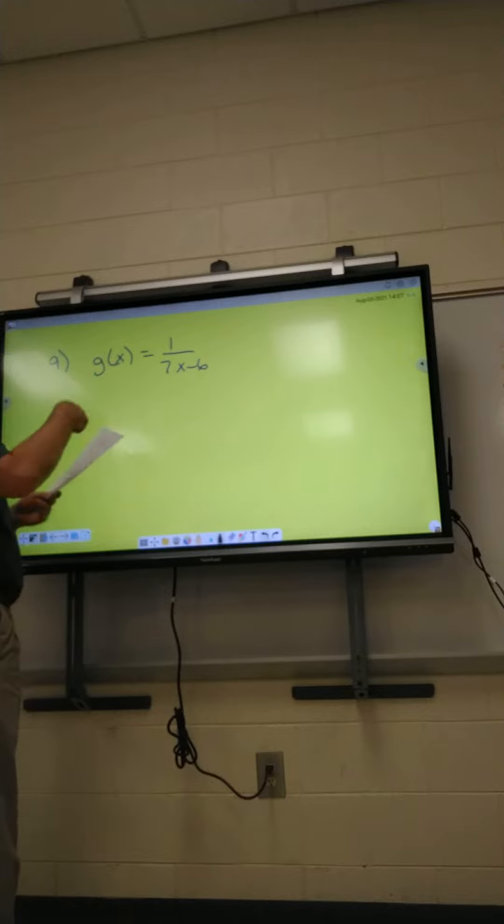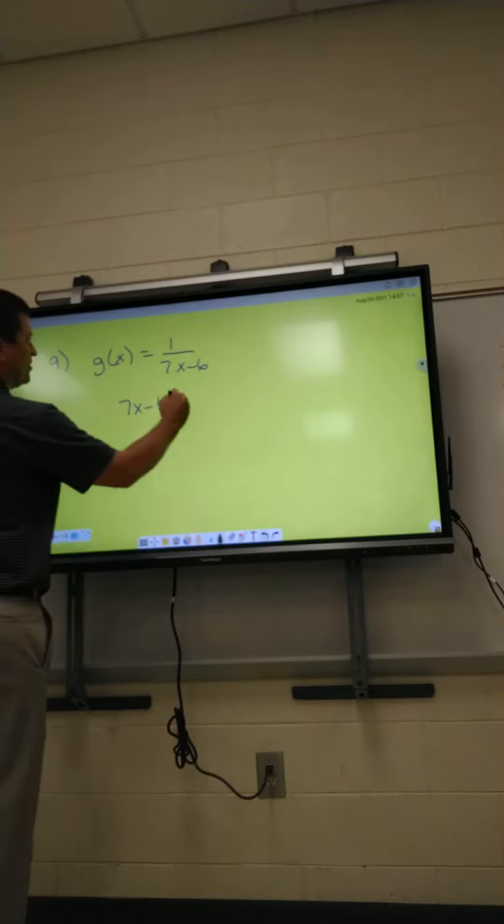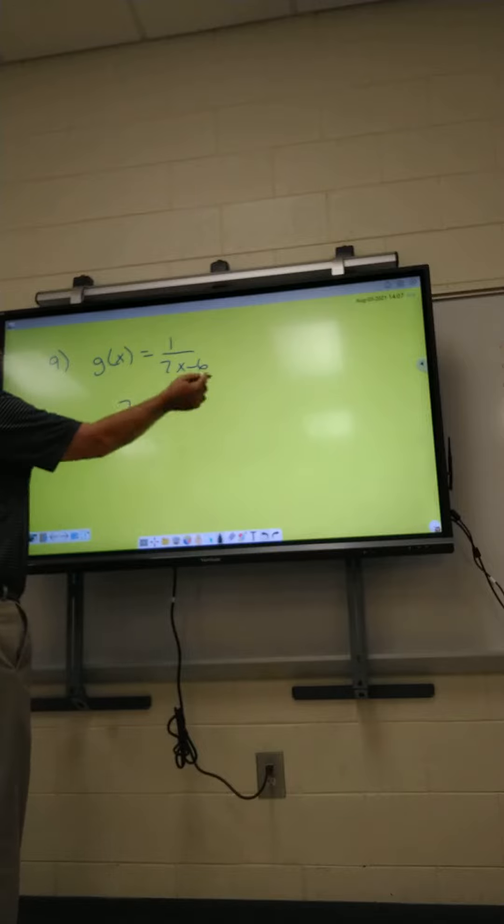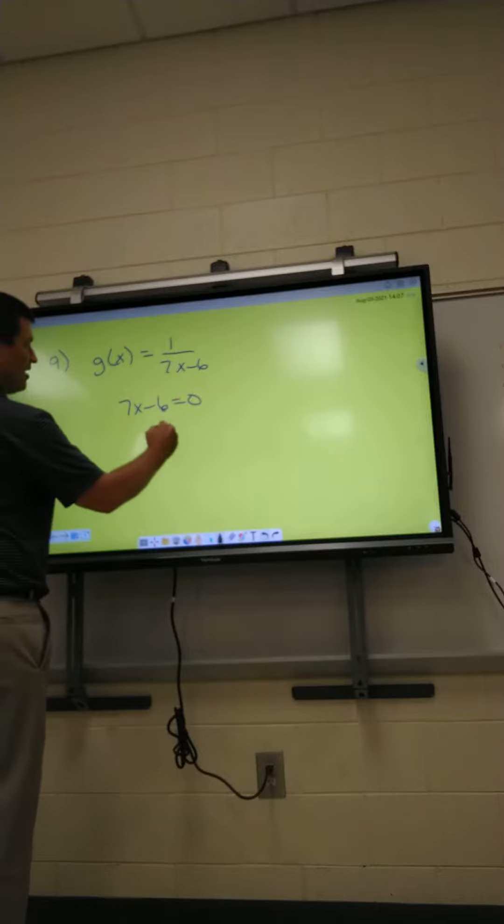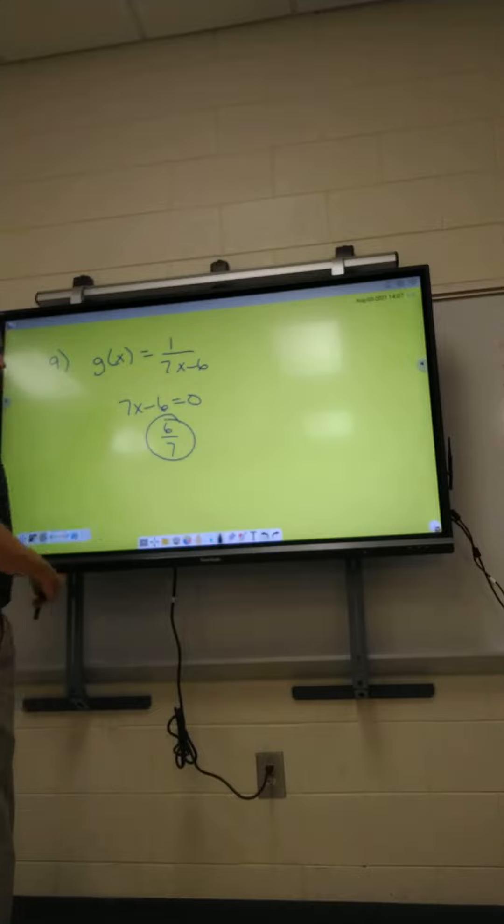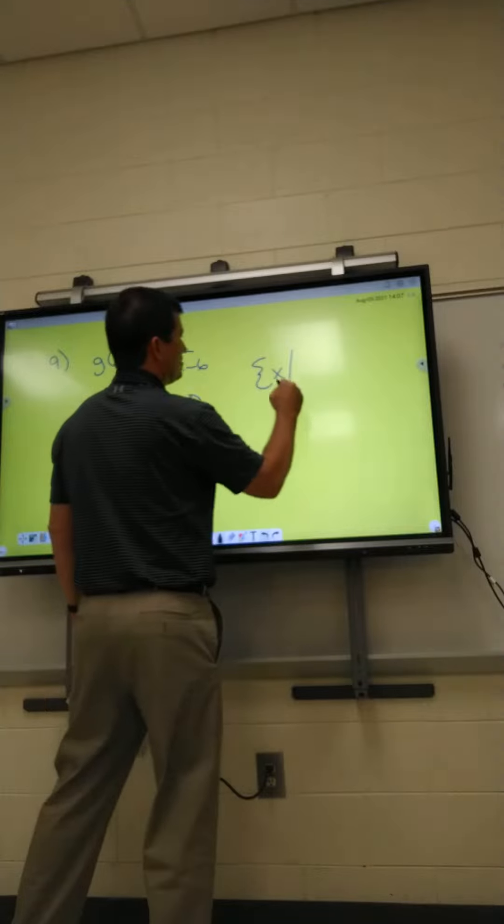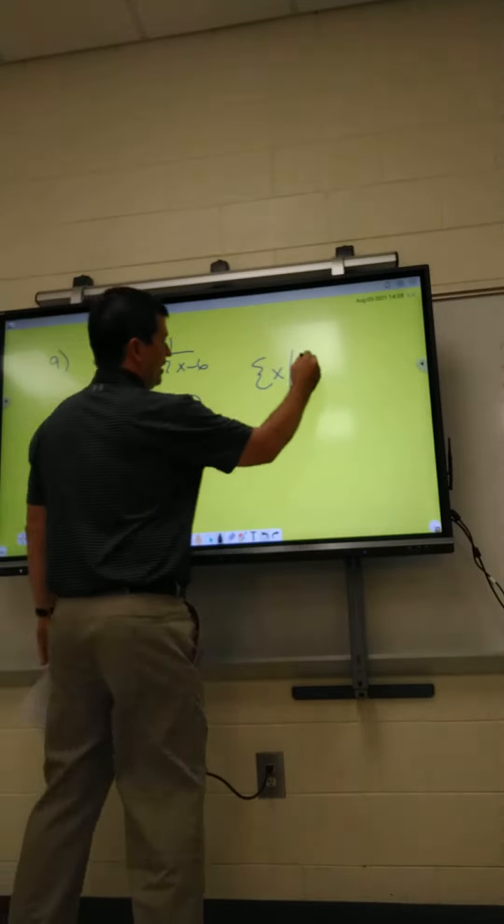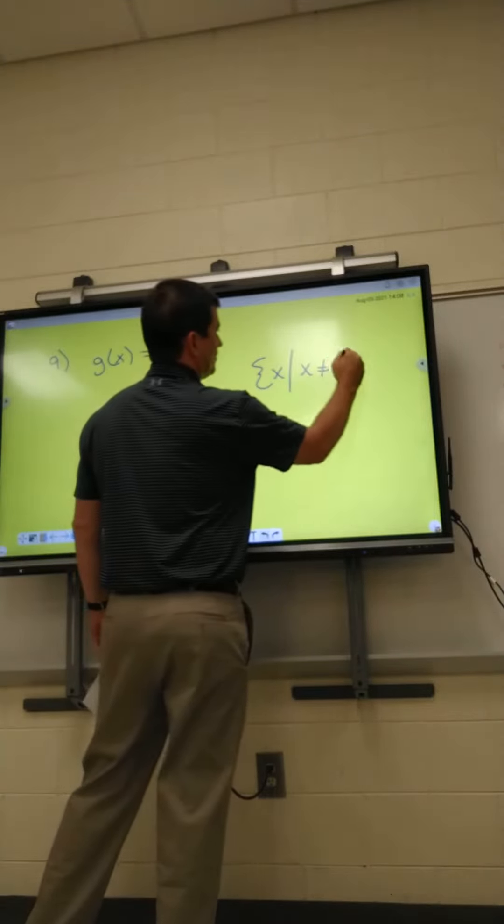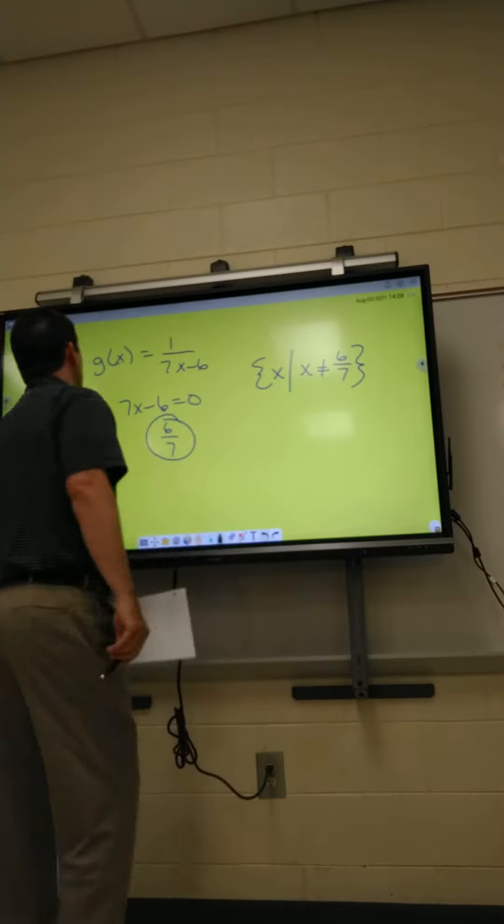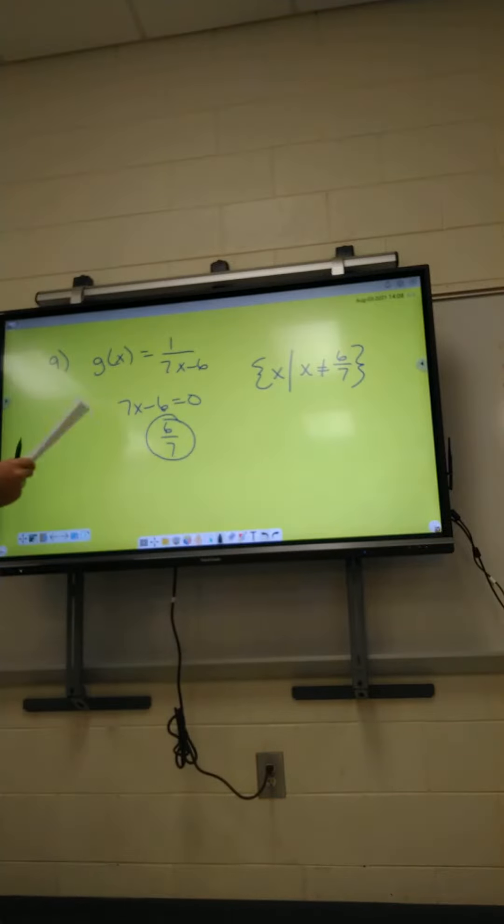Number nine is just like number seven - just take the bottom, set it equal to zero. When you solve it, that's going to give you an answer of six over seven because you move minus six over to make it a positive six. So our answer for this one is x cannot equal six over seven. Let's go to number eight now.